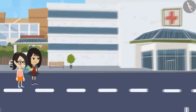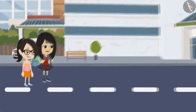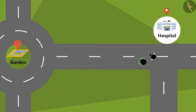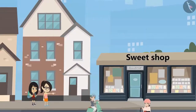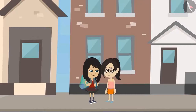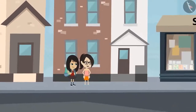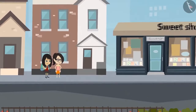Look, there is a hospital. According to this drawing, we should take a right turn. See, the sweet shop is there. Madam's house must be in front of the shop. Look, madam is standing there.